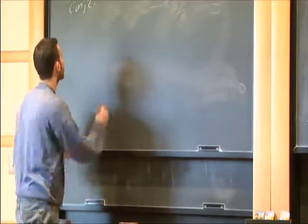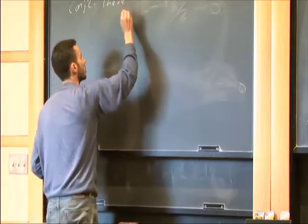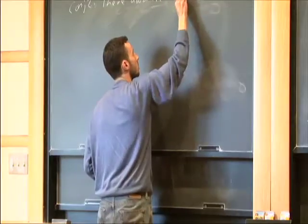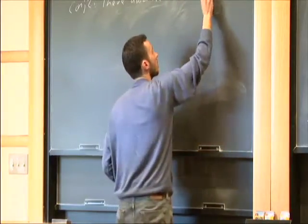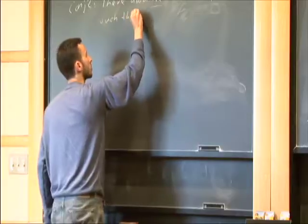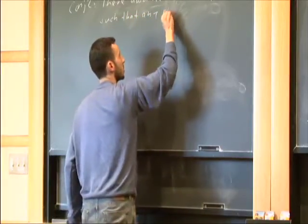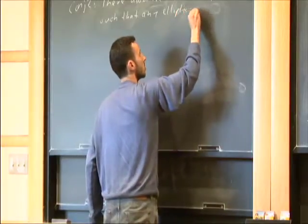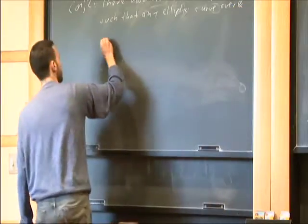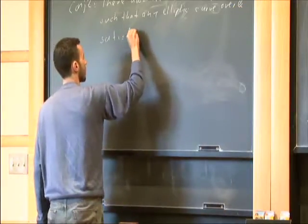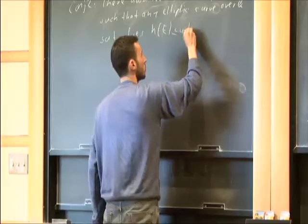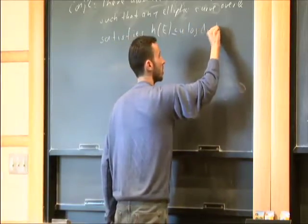Now one can give Conjecture 2: there are absolute constants u, v such that any elliptic curve over Q satisfies h(E) ≤ u log(Δ_E) + v.